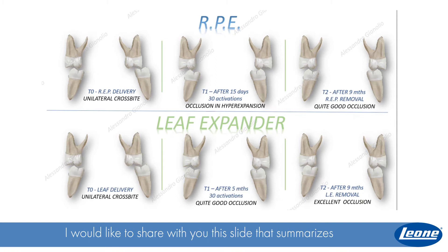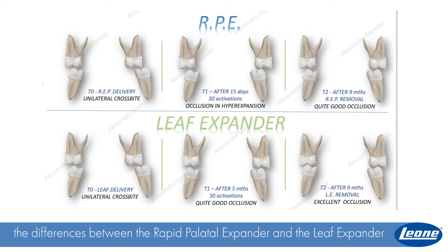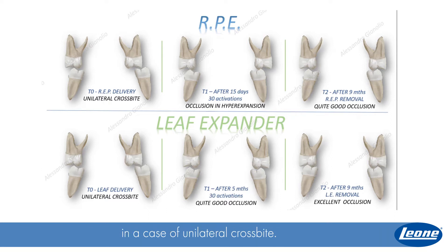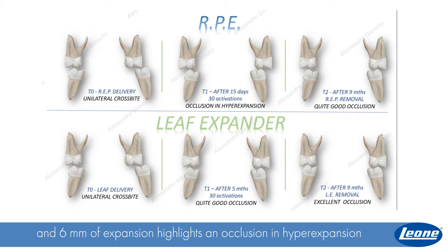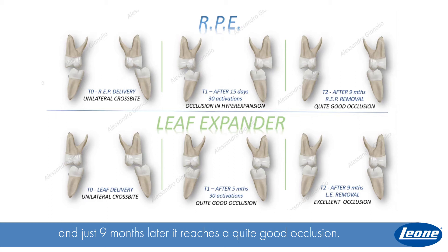I would like to share with you this slide that summarizes the differences between the rapid palatal expander and the leaf expander in a case of unilateral crossbite. In the upper row we can see that the rapid palatal expander after 15 days, 30 activations, and 6 mm of expansion highlights an occlusion in hyper-expansion, and just nine months later it reaches a quite good occlusion.